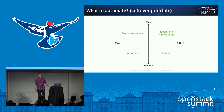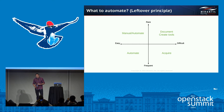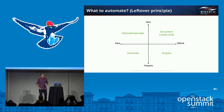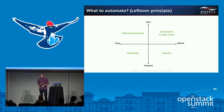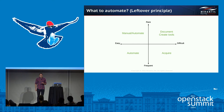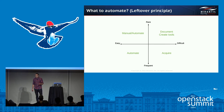When we think about what to auto-remediate, I like to refer to the leftover principle for automation. The idea is that the tasks you cannot assign to the machine are left to humans. If the problem is frequent and easily automatable, we should do it right away — things like service restarts and VM reboots. These are low-hanging fruit for this type of issue.